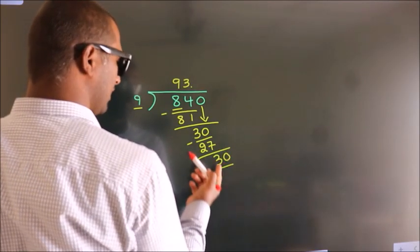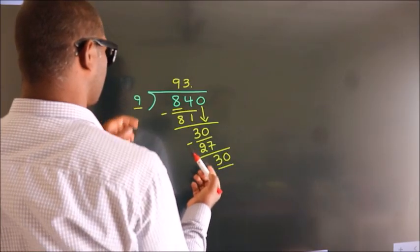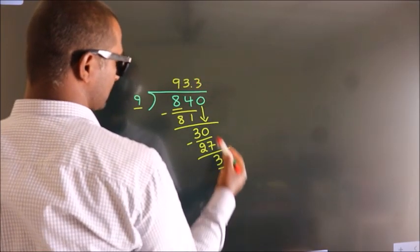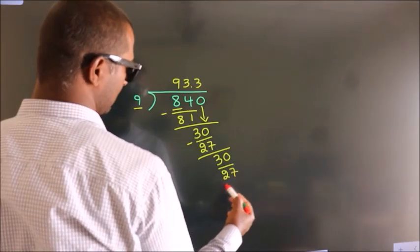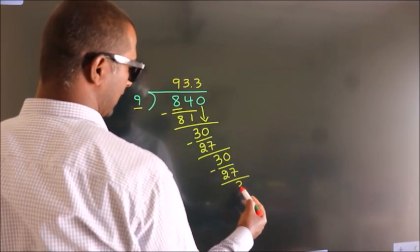So 30. A number close to 30 in the 9 table is 9 times 3 equals 27. Now we subtract and get 3.